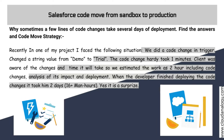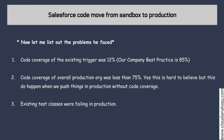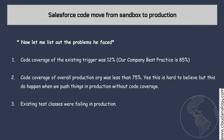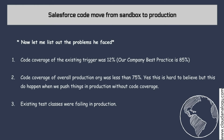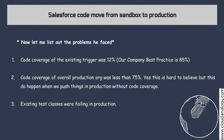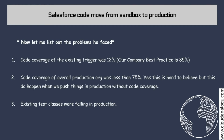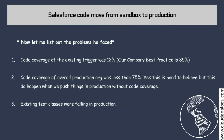We sat down and started discussing what the problems were. The first problem: the code coverage of the existing trigger was only 12%. At Cloud Analogy, our best practice is a minimum of 85% code coverage. Salesforce itself requires more than 0% for triggers and at least 75% for all other classes. It's hard to believe the existing trigger had such low code coverage, but that was the challenge we faced.